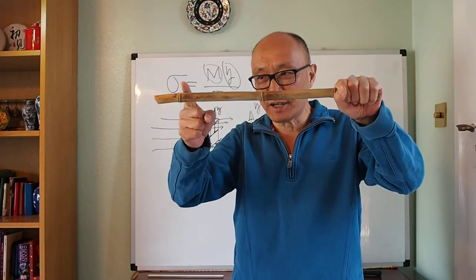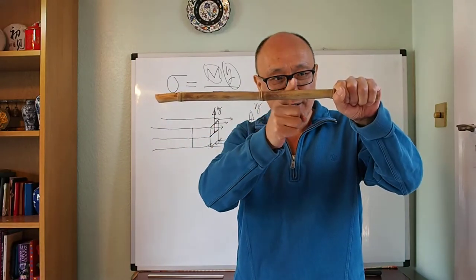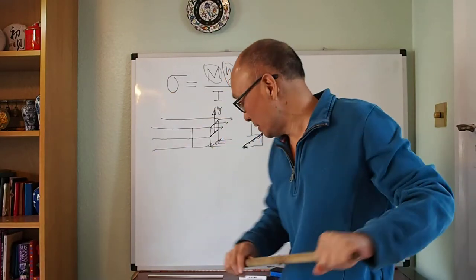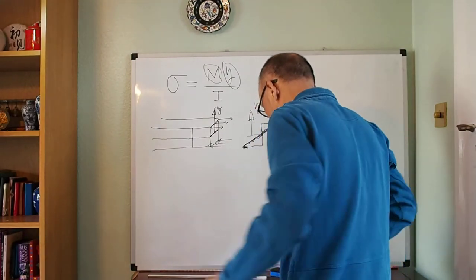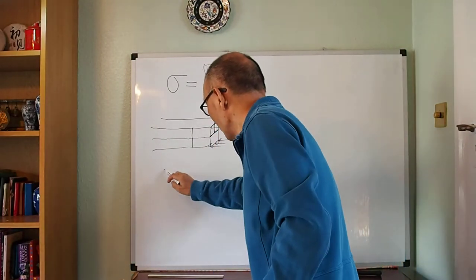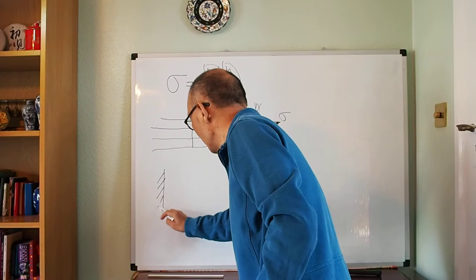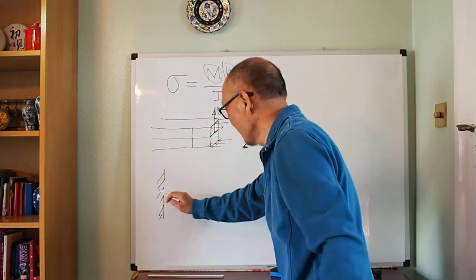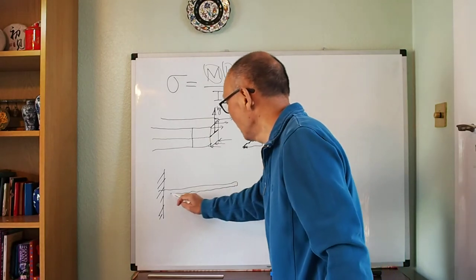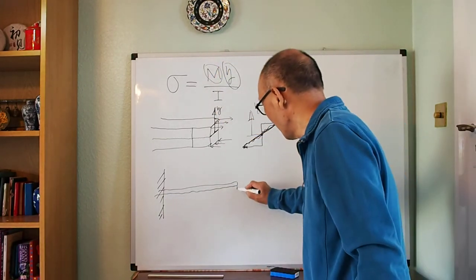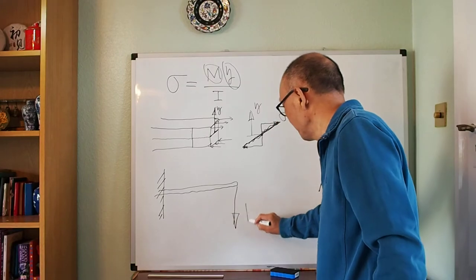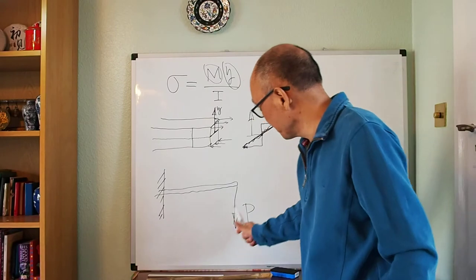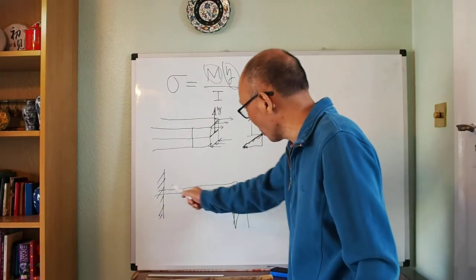Let me draw that beam. My hand holds it really hard at one end, and this is the bamboo. I apply the load at the free end. Obviously, if this beam is going to break, it's going to break at the fixed support — so that's where I'm worried about.